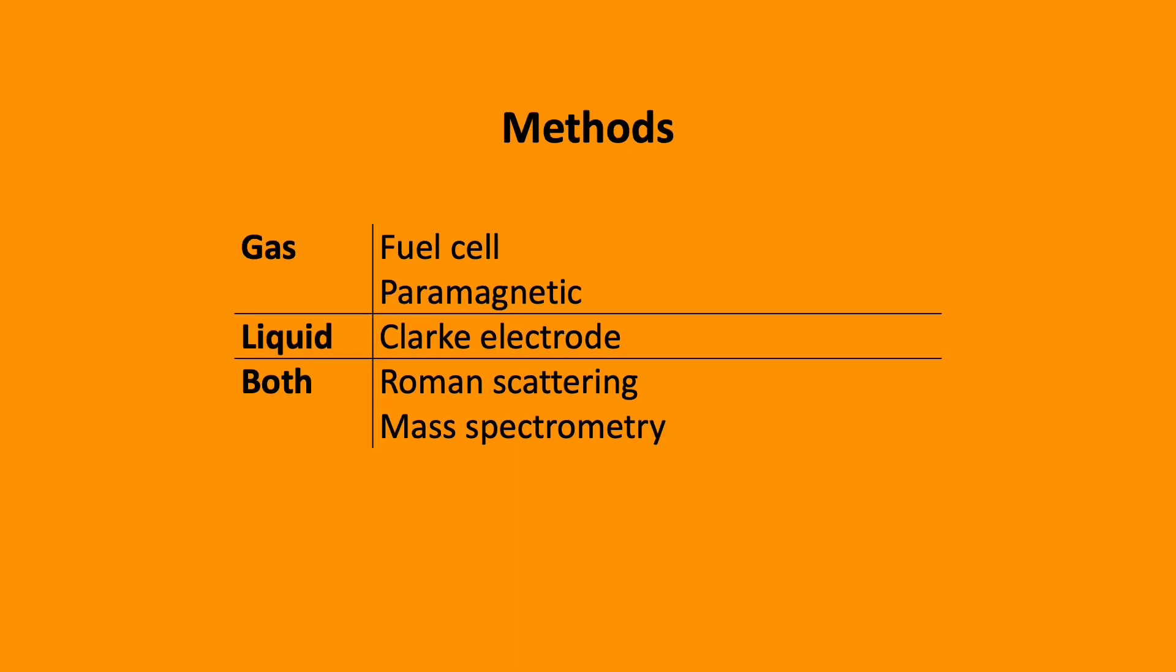Oxygen can be analyzed as a gas or liquid using methods including fuel cell, paramagnetic analyzer, and Clark electrode.